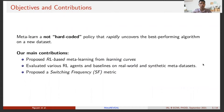From the limitations of existing work, our objective is to meta-learn a non-hard-coded policy that rapidly uncovers the best performing algorithm on a new dataset. We first propose RL-based meta-learning from learning curves. Second, we implemented and evaluated various reinforcement learning agents and baseline methods on some meta-datasets. Lastly, we propose a switching frequency metric to measure how often an agent switches between learning curves.